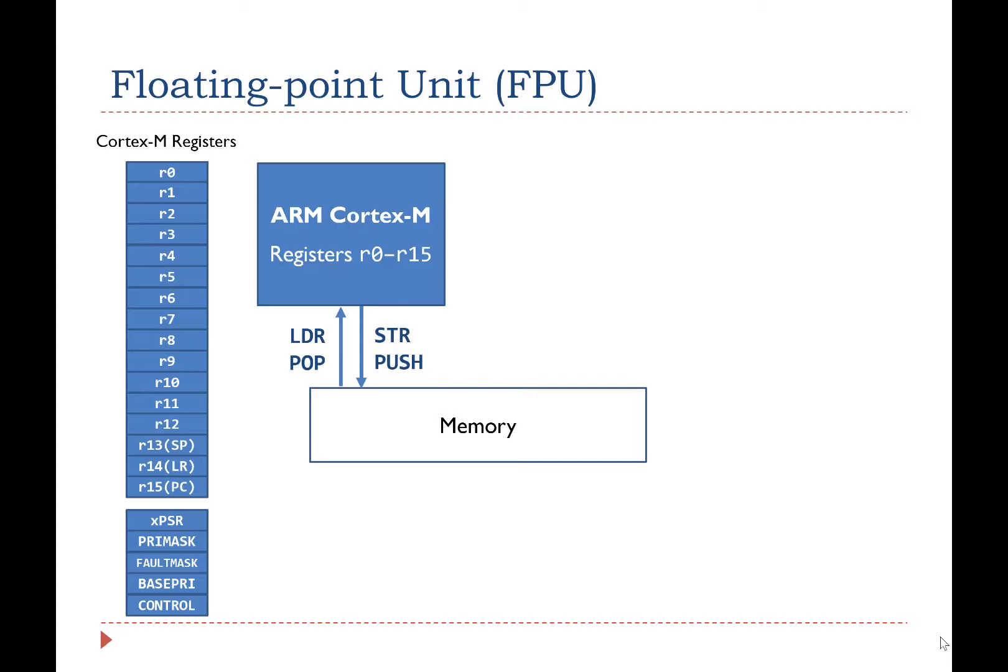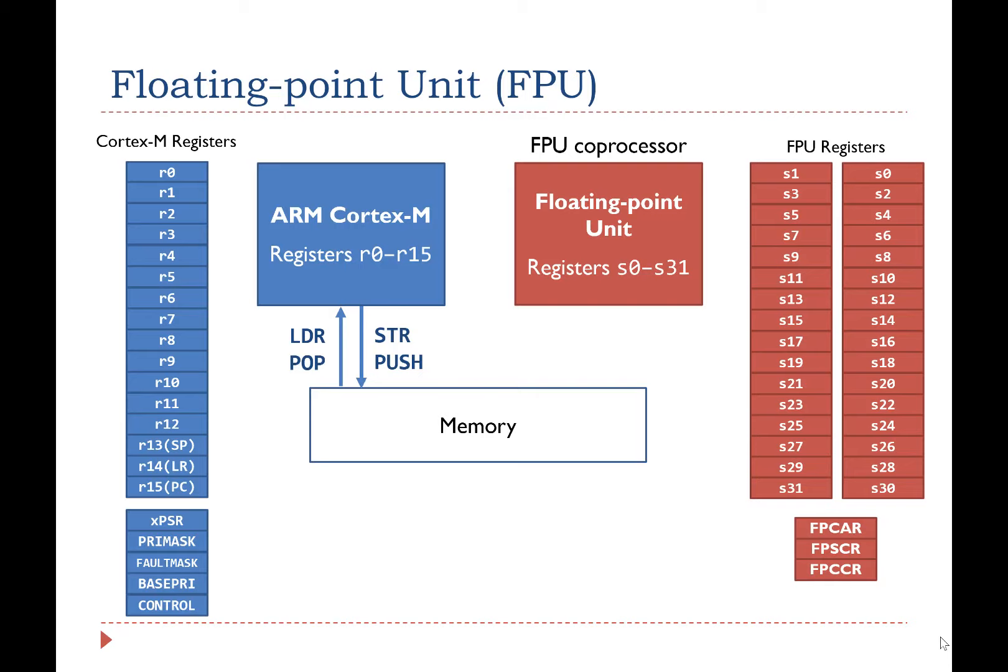Similarly, the FPU coprocessor has its own general and special purpose registers. Specifically, the FPU has 32 single precision registers named from S0 to S31. Here the letter S stands for single precision. Each single precision register has 32 bits, and each of them can hold either a single precision floating-point value or a 32-bit integer.